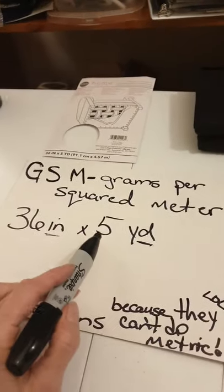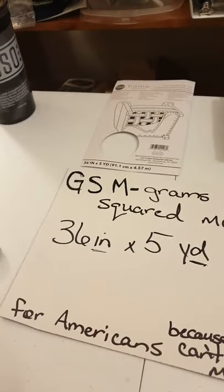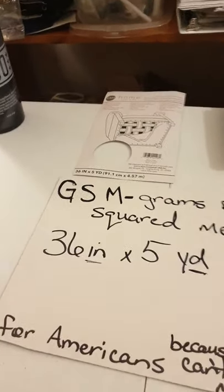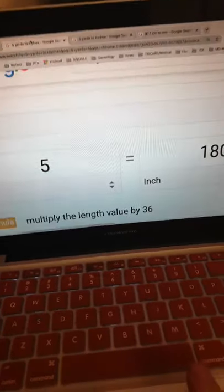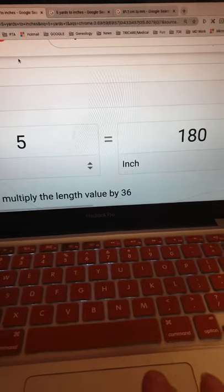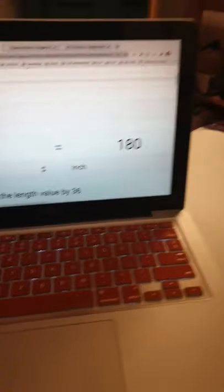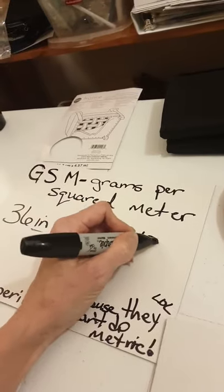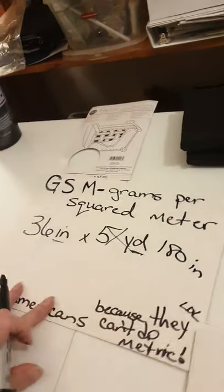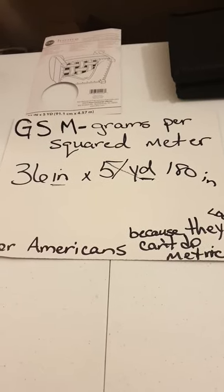If you know how to calculate that, you multiply by 36 inches per yard. If you don't, turn to your favorite search engine and ask how many inches are in a yard, or how many inches are in five yards, and it will tell you it's 180. So we're going to put 180 inches — there we have it: 36 inches by 180 inches.